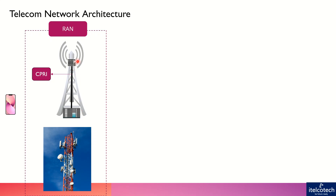We'll talk about and simulate it through one video where I've taken a live video from the site to depict what these different equipments and their functions are. Whenever any user wants to connect to the network, this is the sub-network which comes into the picture — the Radio Access Network — and it uses radio waves which connect the user with the base station depending upon the geography it is lying into.